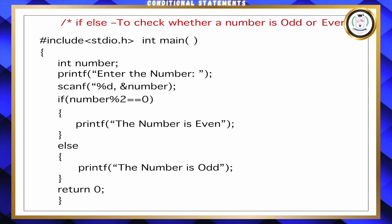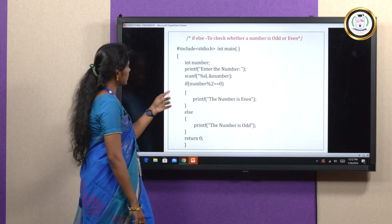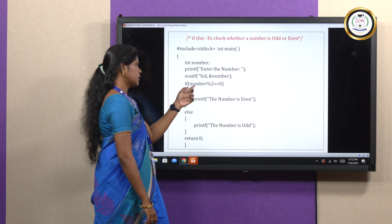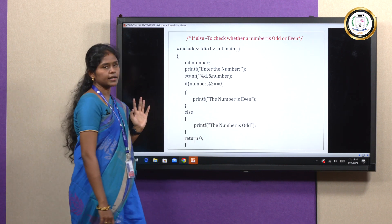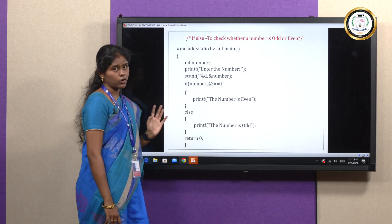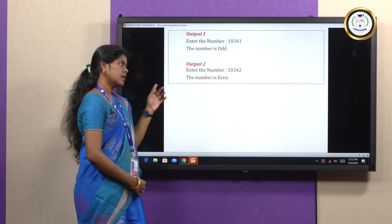We will see with an example. Same as the previous example, I checked for even numbers. Now I am going to check whether the given number is even or odd. Using printf and scanf, I am getting the number. If the number modulo 2 equals 0, it is an even number; otherwise, it is an odd number. In the output, you can see: the number 10341 is an odd number, and if I enter 10342, that is an even number. This is the example for the if-else statement.